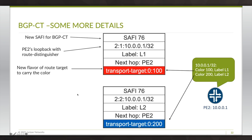Let's look at some of the nuts and bolts behind BGP-CT. There's a new SAFI defined for it — regardless of whether you're talking about IPv4 or IPv6, the SAFI value is 76. Because we're advertising the same address with different attributes, we need to disambiguate those two versions, and route distinguishers are used to achieve that. Then you have label value L1 for the color 100 transport and a different label value L2 for the color 200 transport. In order to convey the actual color, there's a new flavor of route target called transport targets, and the color is embedded within that.